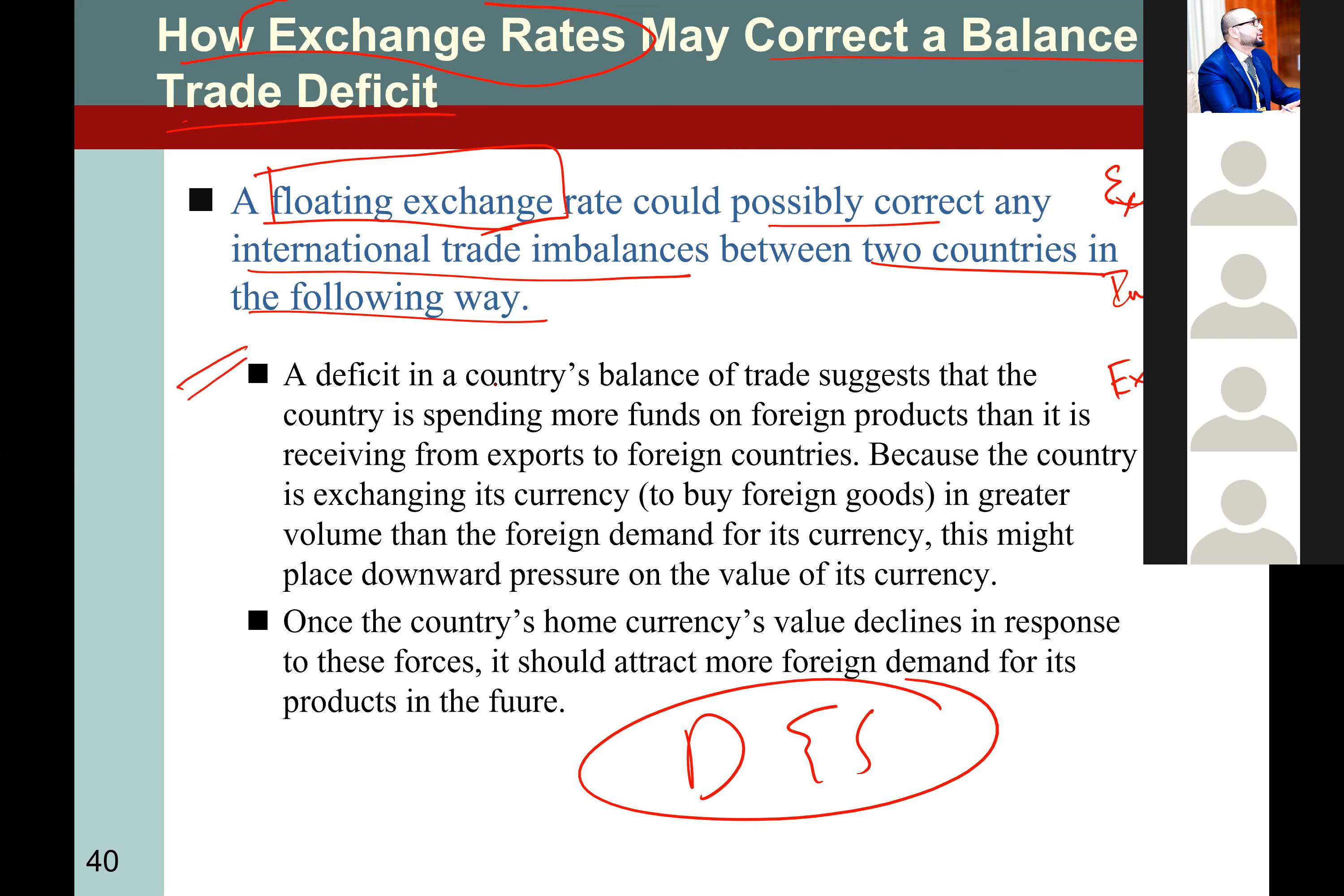A deficit in a country's balance of trade suggests that the country is spending more funds on foreign products than it's receiving from exports. Because the country is exchanging its currency in a greater volume than the foreign demand for its currency, this might place downward pressure on the currency value.